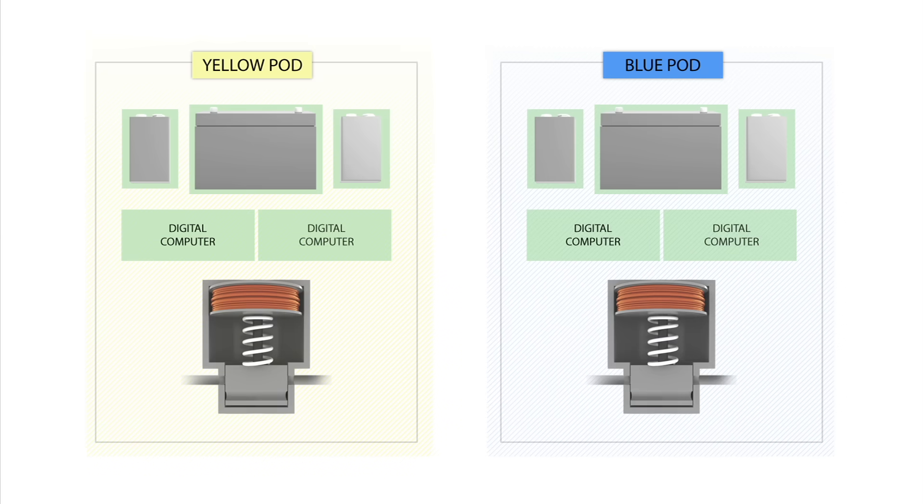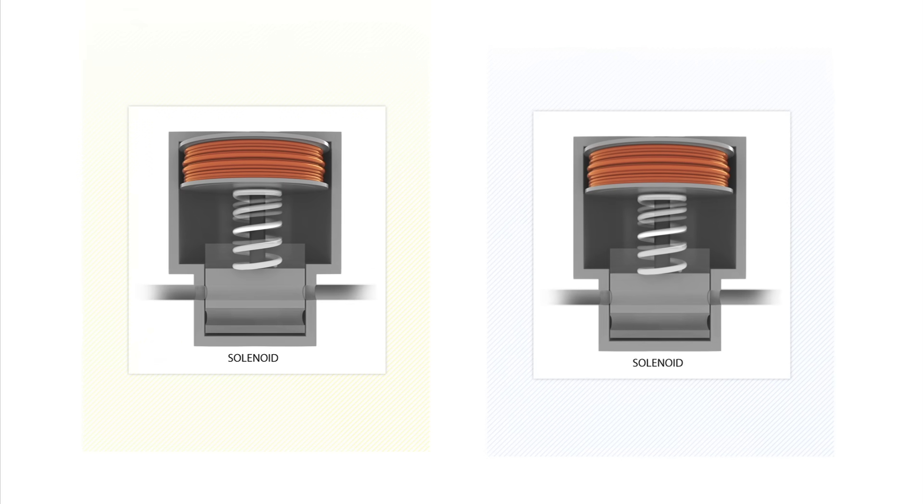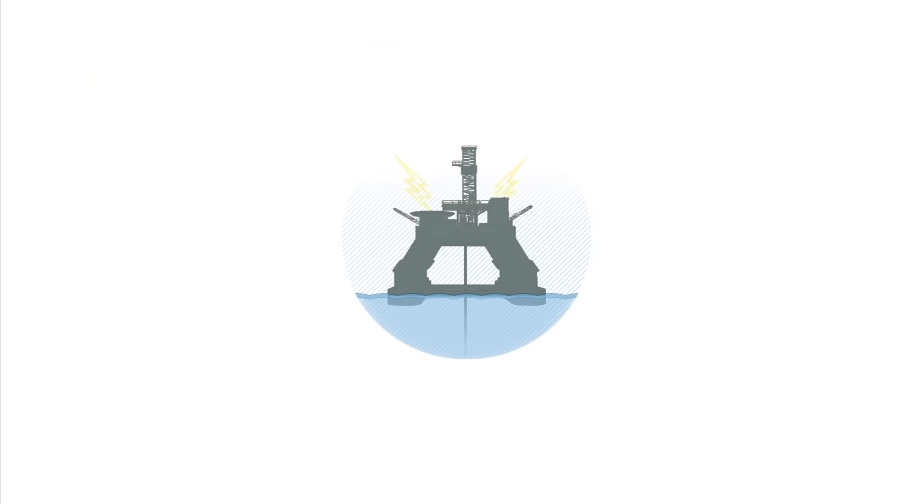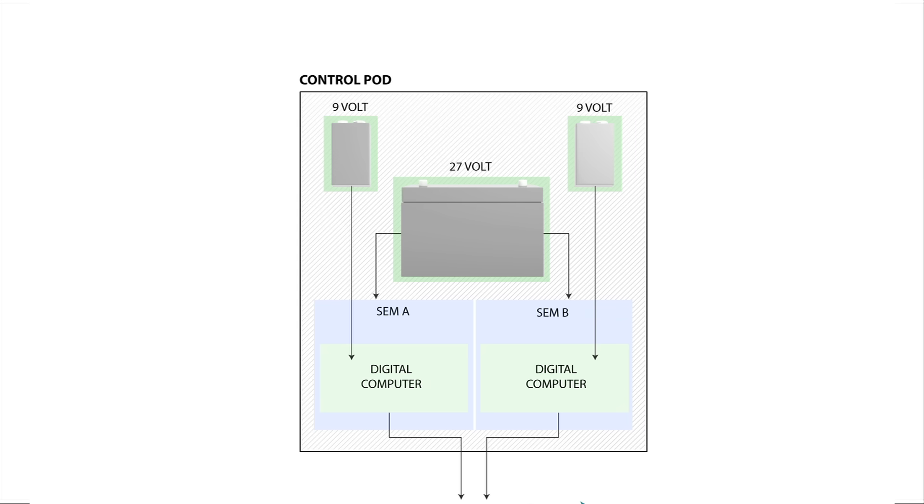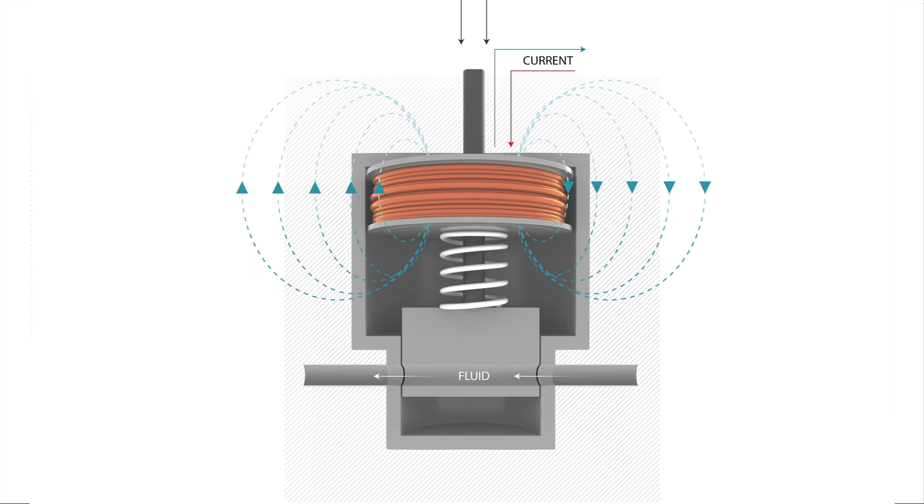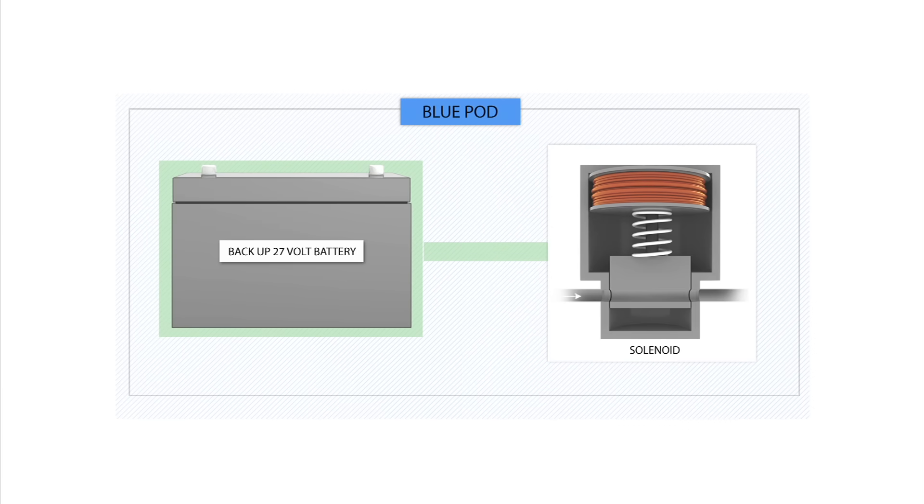The yellow and blue pods worked independently of each other and were comprised of identical enclosed computer systems and sets of solenoid valves. When activated, the solenoid valves controlled important BOP functions, such as closing the blind shear ram. If electrical power from the rig was lost, as happened on April 20, 2010, both the yellow and blue control pods contained backup 27-volt and 9-volt batteries to power emergency functions. The 9-volt batteries powered computers that would activate the solenoid valves, which were powered by the 27-volt batteries. However, evidence indicates the blue pod had been miswired at some time before the BOP was lowered onto the seafloor. This caused the pod's 27-volt battery to drain and made it impossible to operate the solenoid valve for the blind shear ram on the night of the accident.